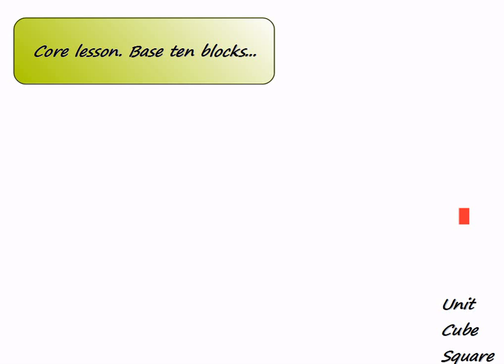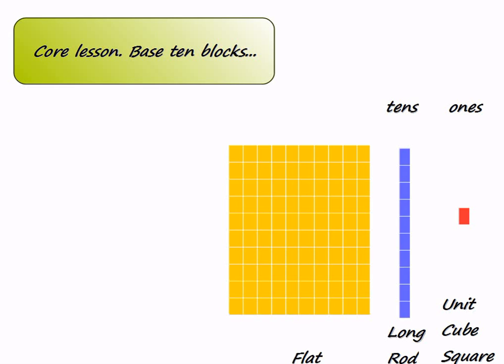Base 10 blocks are mathematical manipulatives used to help understand basic mathematical concepts such as place value. They come in 4 sizes to indicate their individual place value. Units, squares, or cubes represent the ones place. Ten units come together to make one long. Every long is made of 10 units, and a long is 10 times bigger than one unit. Longs represent the tens place. Ten groups of longs make one flat. One flat represents the hundreds place and is 10 times bigger than one long.